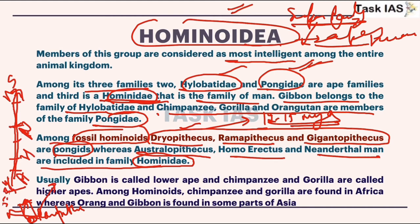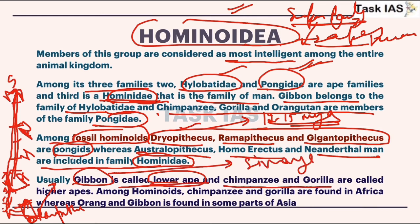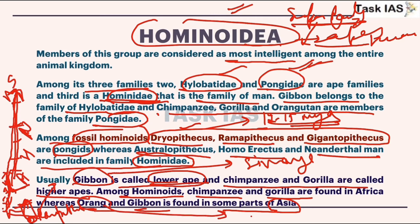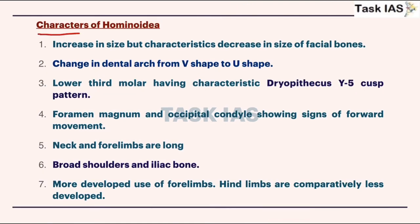Australopithecus, Homo erectus, and Neanderthal man are included in family Hominidae because they are in the direct sequence of human evolution: Homo sapiens, then Neanderthals, Homo erectus, and Australopithecus. Dryopithecus and Ramapithecus are not in the direct ancestor line. It is considered that around five to seven million years ago the break from non-hominoid to hominoid evolutionary processes took place. Gibbon and siamang are lower apes; chimpanzee and gorilla are higher apes or great apes.